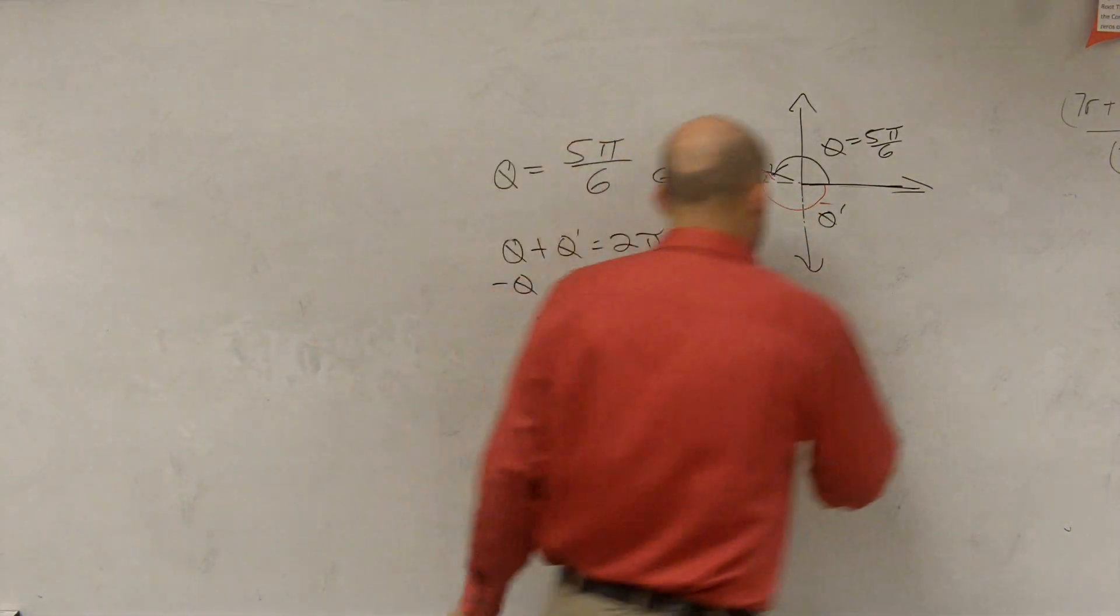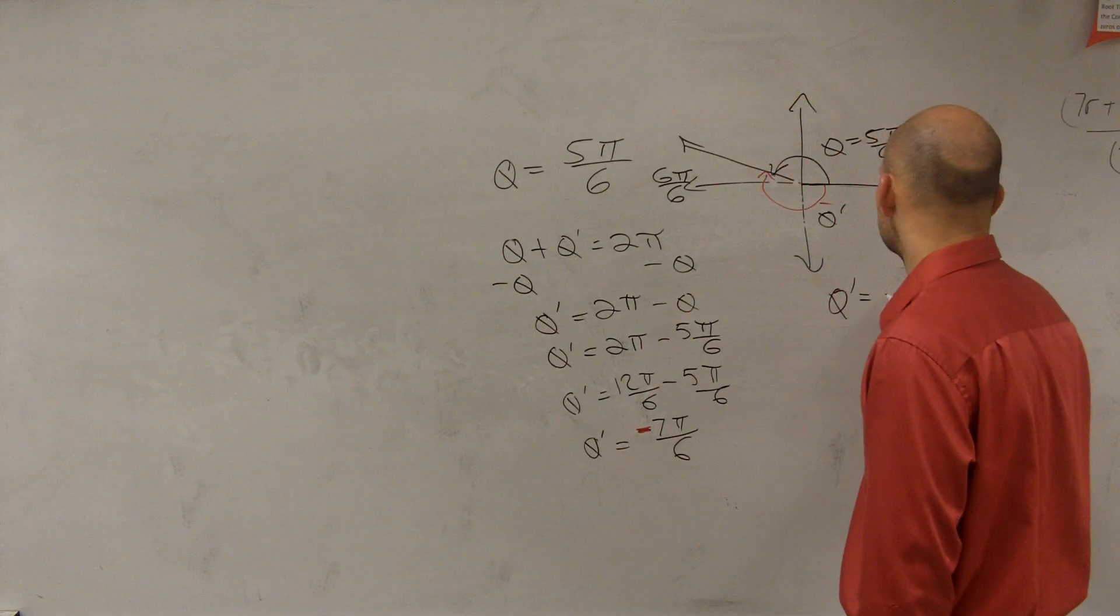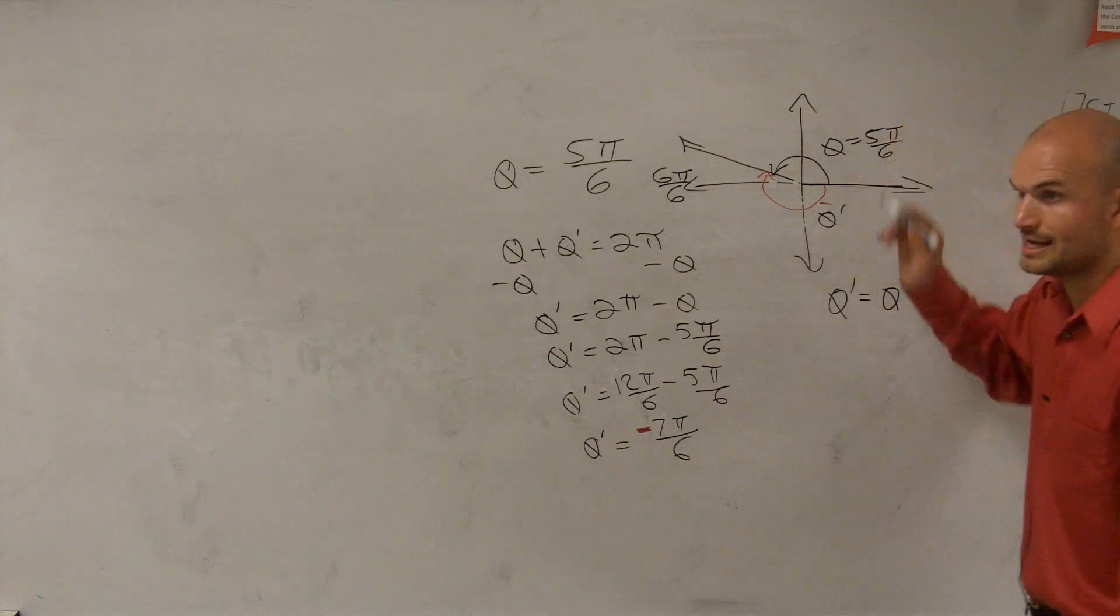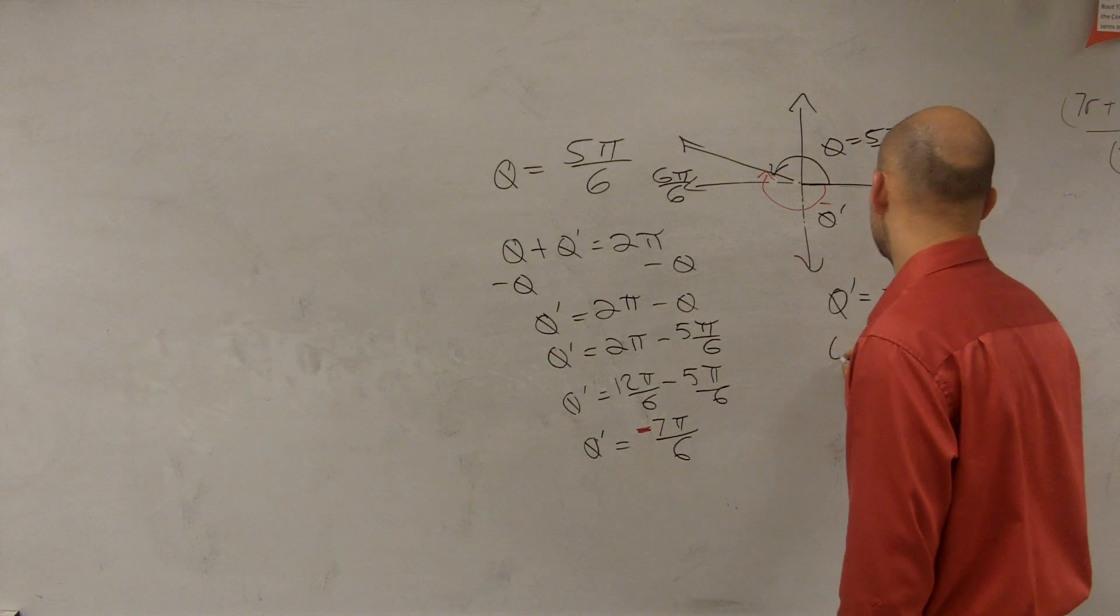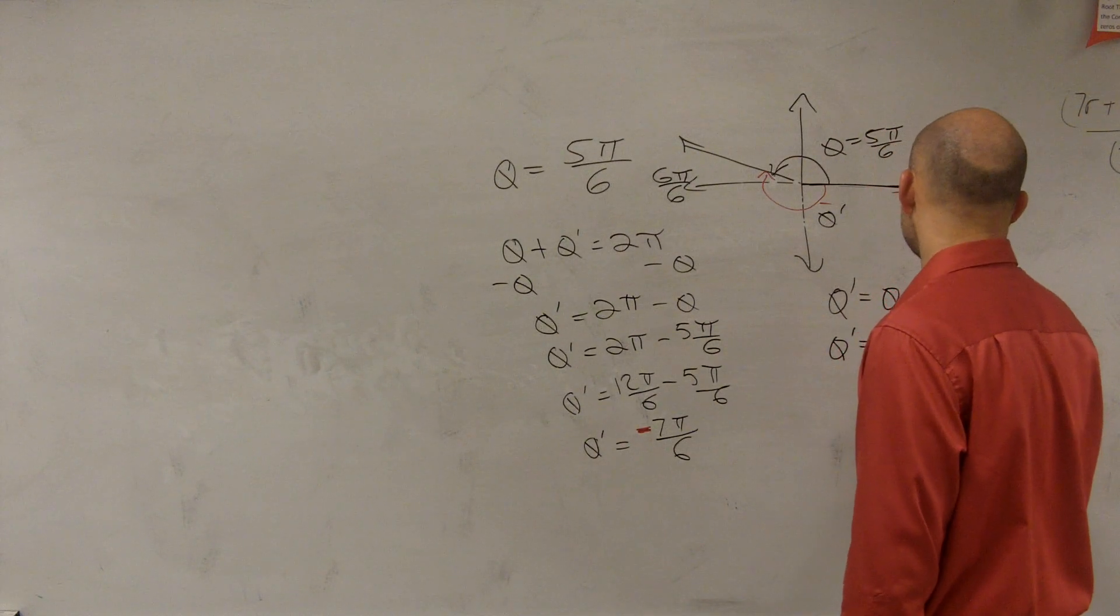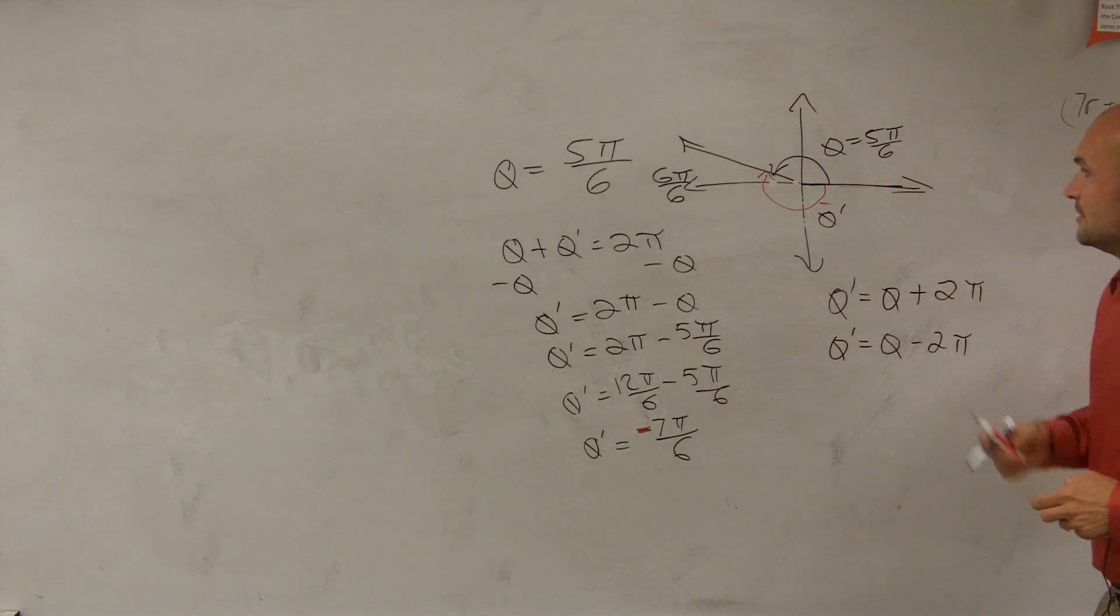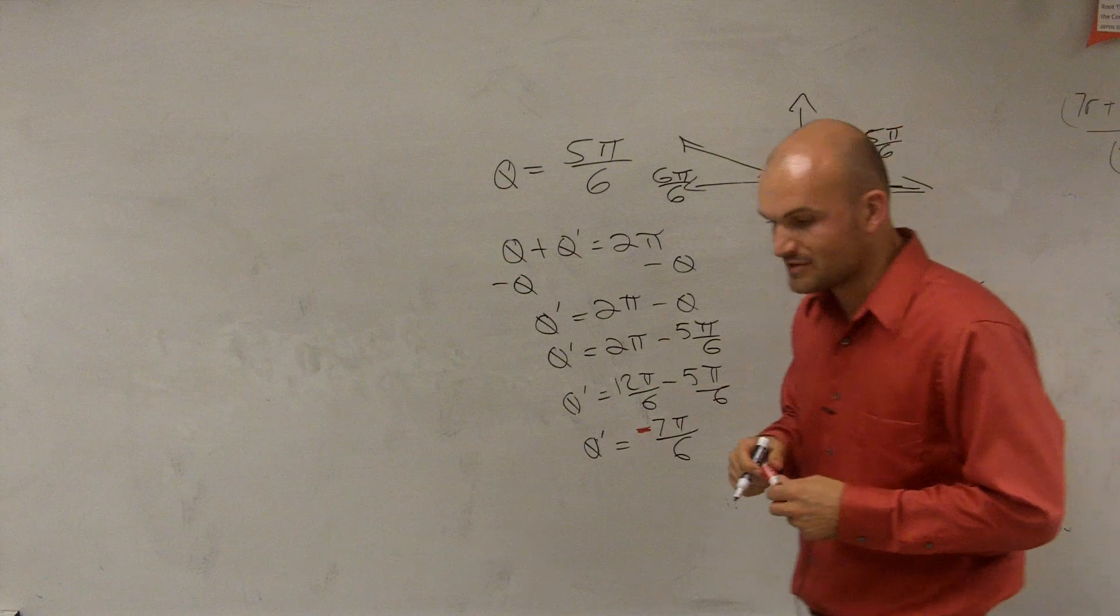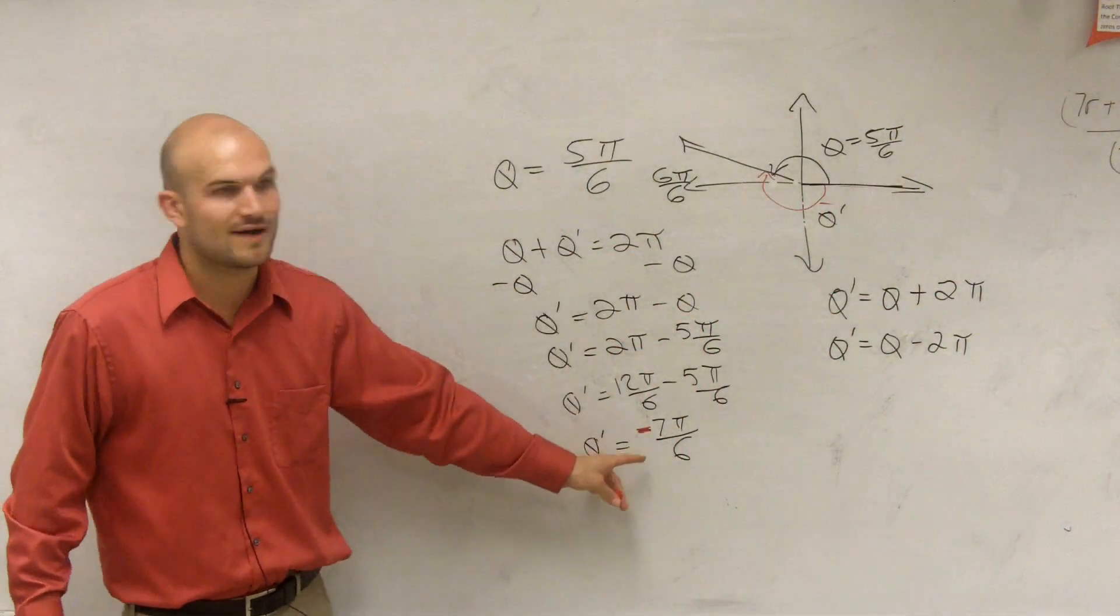The easier way, the best way that we like to just find co-terminal angles, all you can do is if you just take your θ, your angle, and if you just add 2π, or if you take θ and subtract 2π, you'll get the exact same answer. So if you guys would have taken 5π over 6 and subtracted 2π, you would have gotten negative 7π over 6.